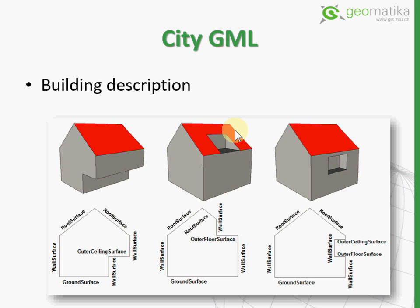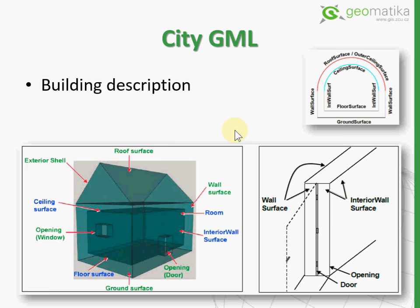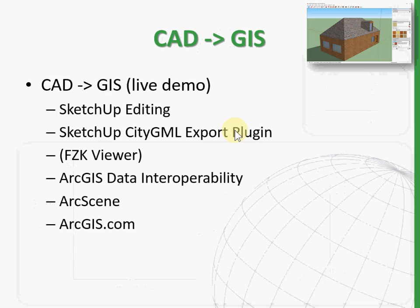CityGML also describes in detail how to create the model in the CAD environment — specifying which surfaces should be roof surfaces, which should be building installations, which should be walls, and so on. This is essentially a methodology for creating the CAD model. It is very important to follow this methodology; otherwise you will not be able to convert the data from CAD to GIS properly. This is the core foundation, and now I'd like to show a live demonstration.